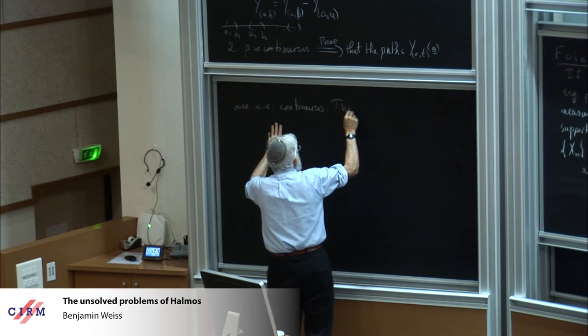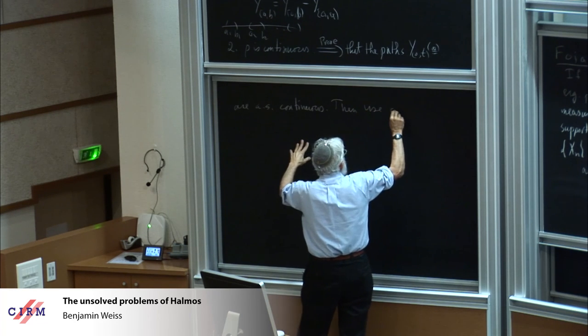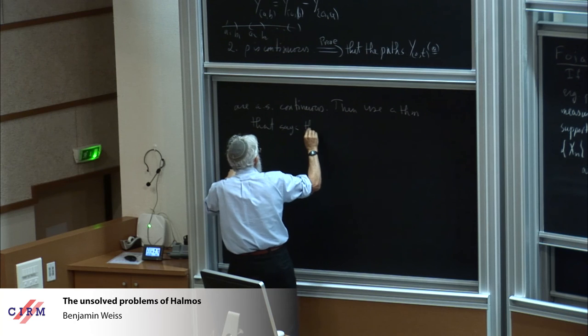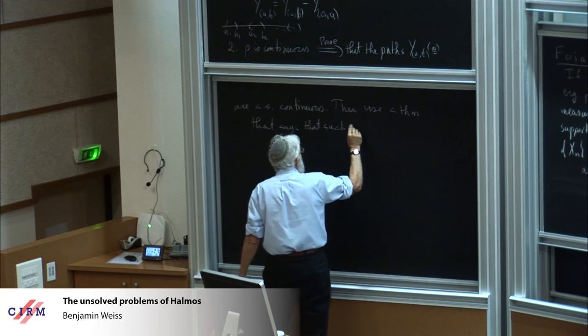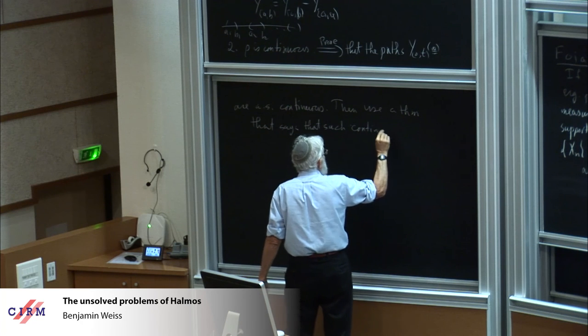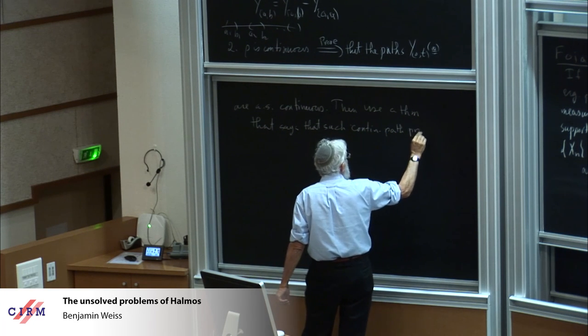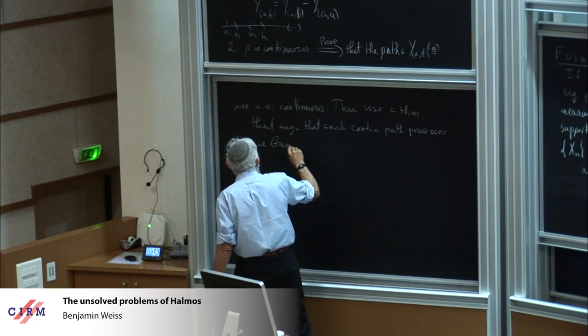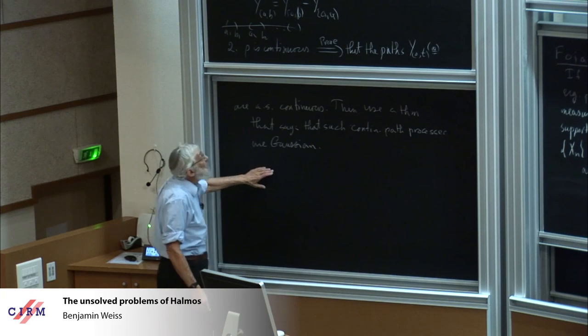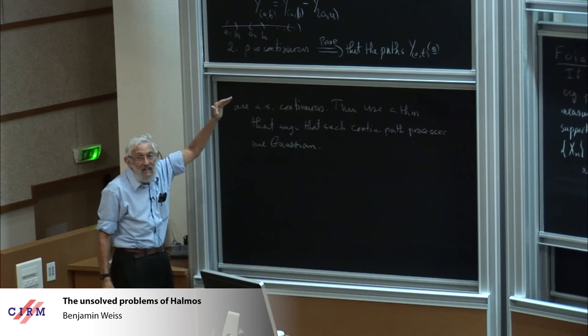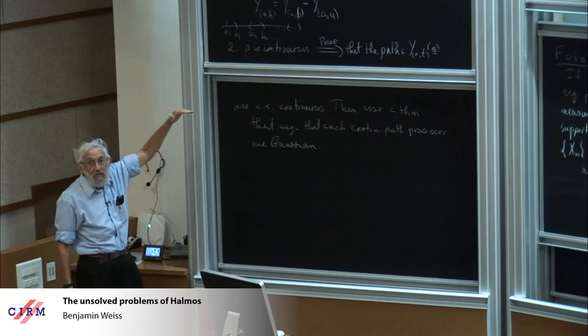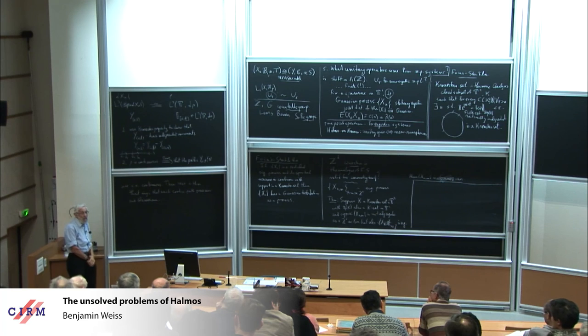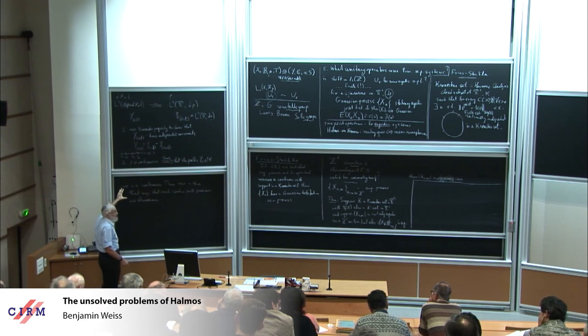And then, rho is continuous, and you use that to prove, and this requires a proof, prove that the paths, Y_0t omega, for fixed omega as a function of t, the paths are almost surely continuous. Then, use a theorem that says that such continuous path processes with independent increments are Gaussian. So, what you deduce is that the Y_0t is Gaussian, but then the whole Hilbert space that it spans is Gaussian, and this is the same as the Hilbert space, this is L2. So, this is the way the Foias-Stratila theorem is proved.